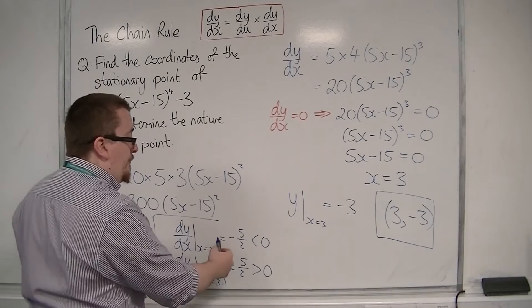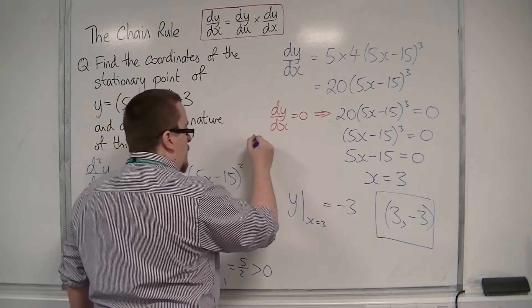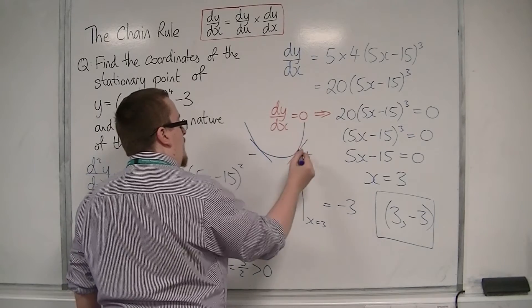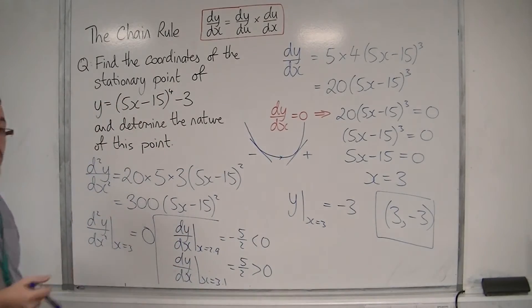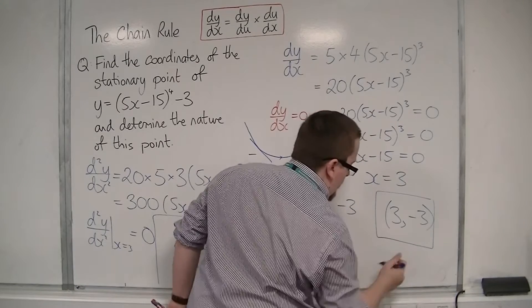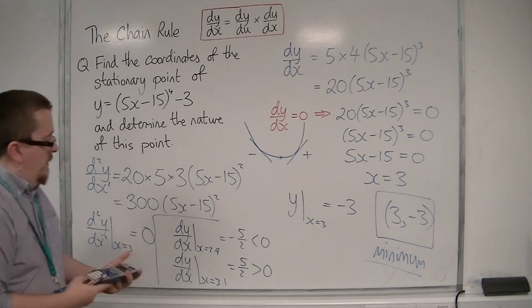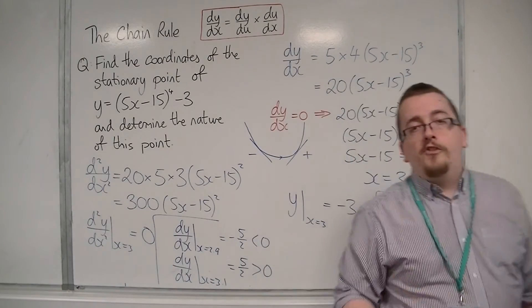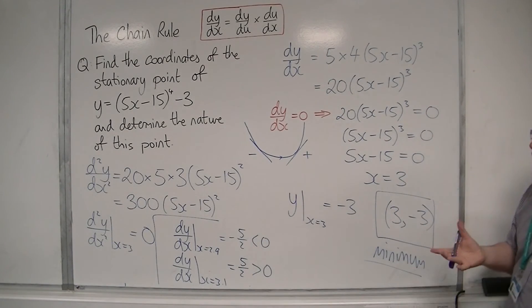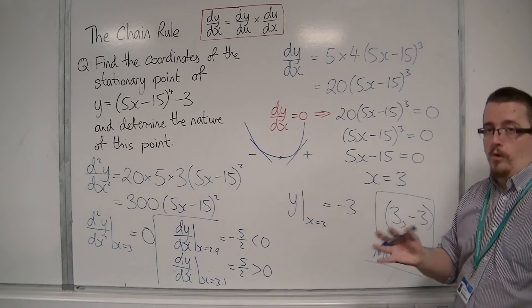So we're going from a negative to a positive gradient, meaning the curve goes down then up — so the stationary point must be a minimum. The second derivative was useful to compute using the chain rule, but in this case it didn't help us determine the nature. Looking at the gradient either side of the stationary point was what allowed us to determine whether it was a maximum, minimum, or point of inflection.